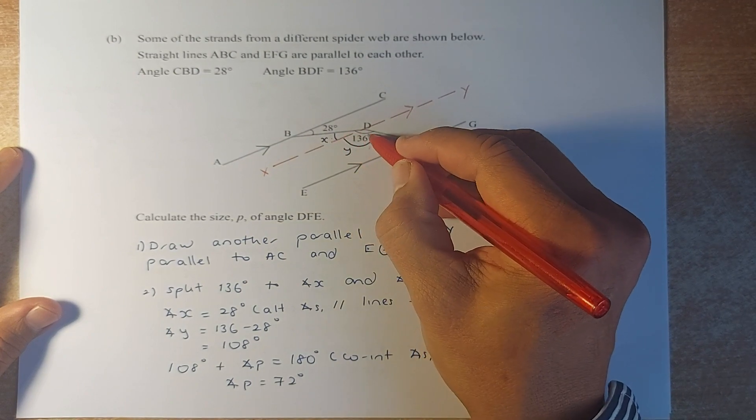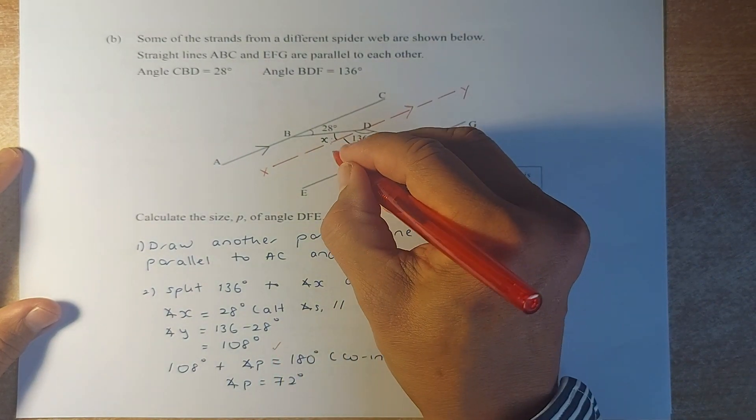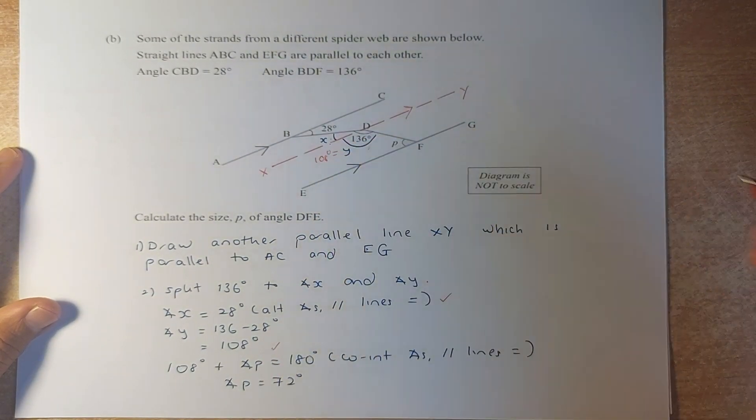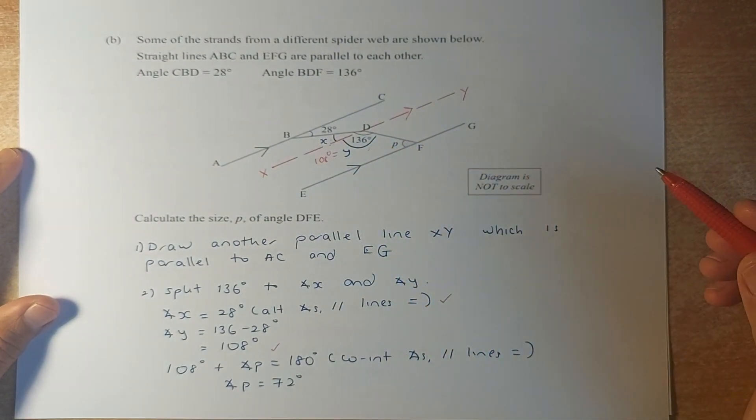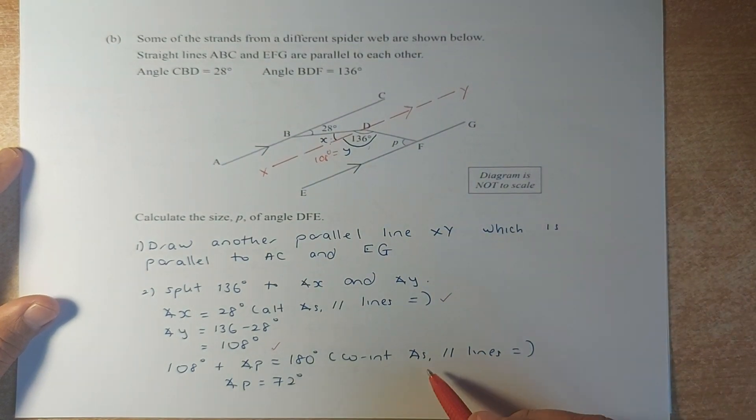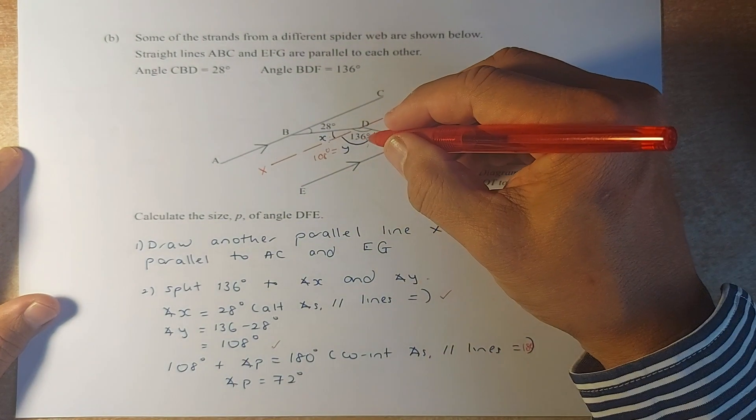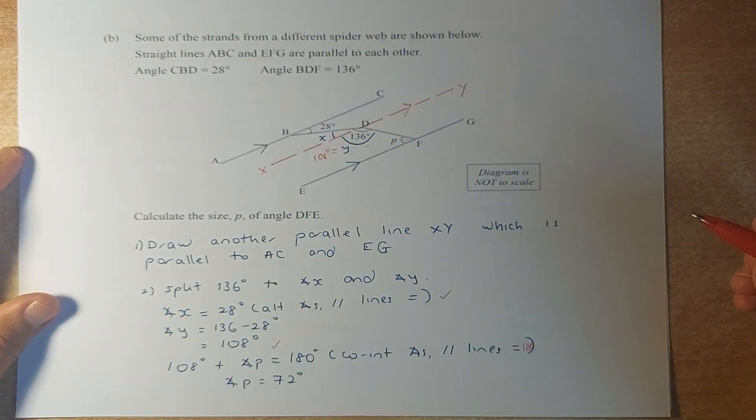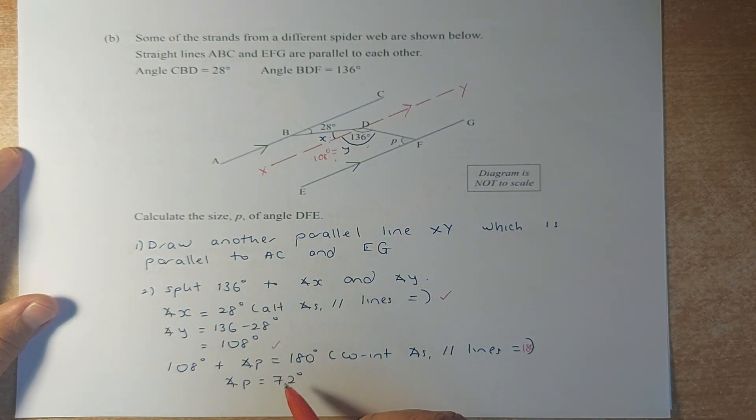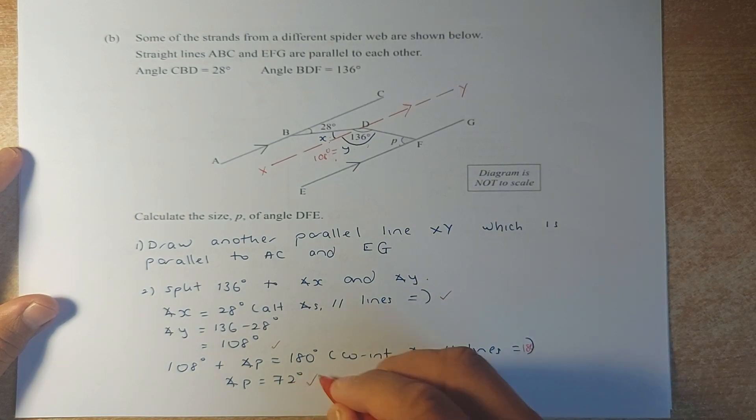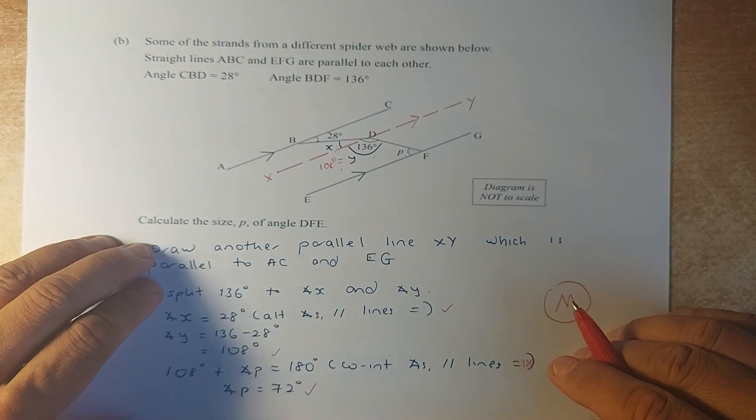Once you know X, you can find Y because this whole angle is 136. So 136 minus 28 will give you 108. So Y is 108 degrees. To find your P, these two angles must add up to 180 because co-interior angles on parallel lines add up to 180. Co-interior angles, they are not equal but they add up to 180. So if this is 108, P has to be 180 minus 108. The answer is 72 degrees and that is a merit.